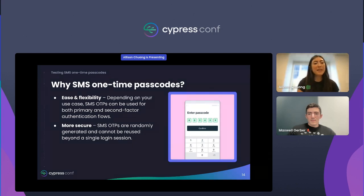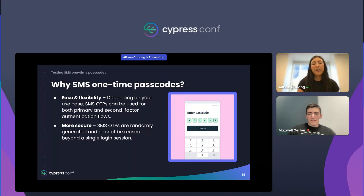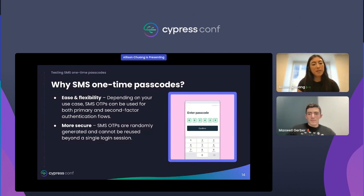SMS OTPs are super flexible. Depending on your use case, you can use them as your primary auth factor or as a secondary auth factor for higher security applications — think like a fintech app. Like email magic links, SMS OTPs are also randomly generated and expire after use, meaning they will only work for a single login session.